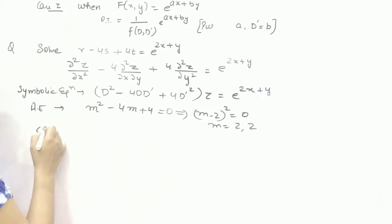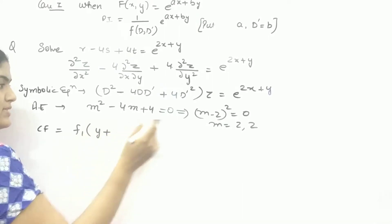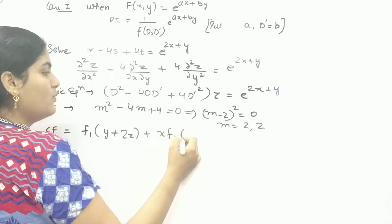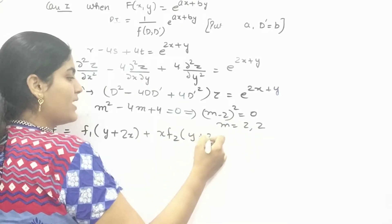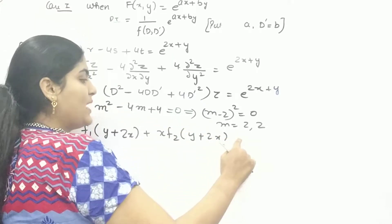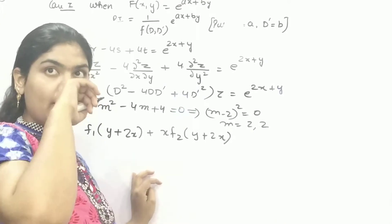So for real and equal roots, complementary factor is F1 of Y plus M1X plus X times F2 of Y plus M2X. If it would have three zeros, then it would be X squared F3 of Y plus that.